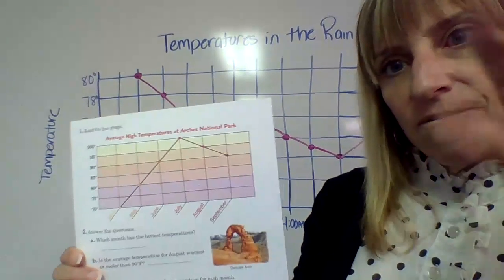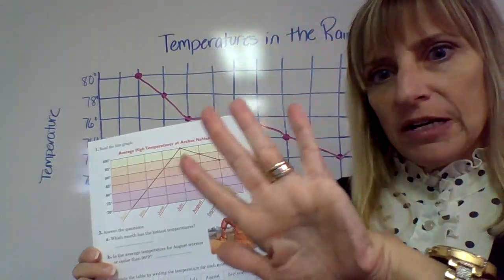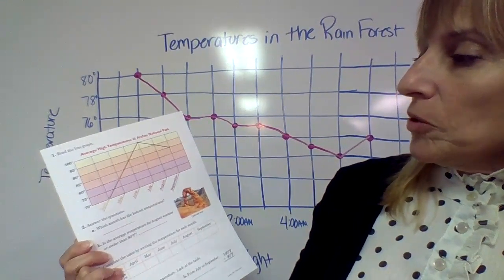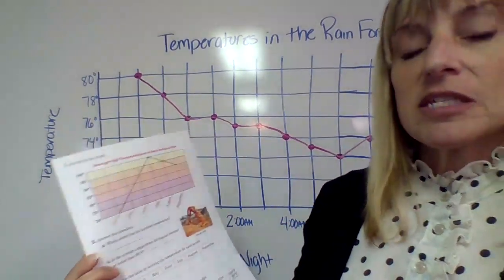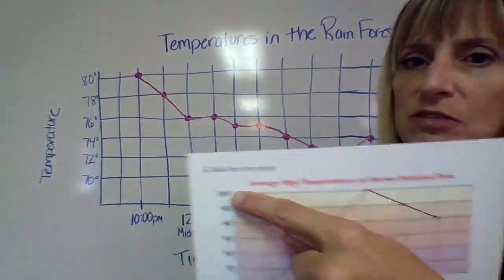So what am I counting by on this graph? Fives. We're doing fives. And we're doing April, May, June, July, August, September. That's six months.